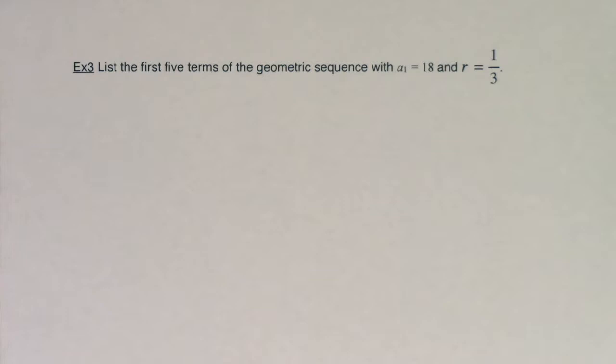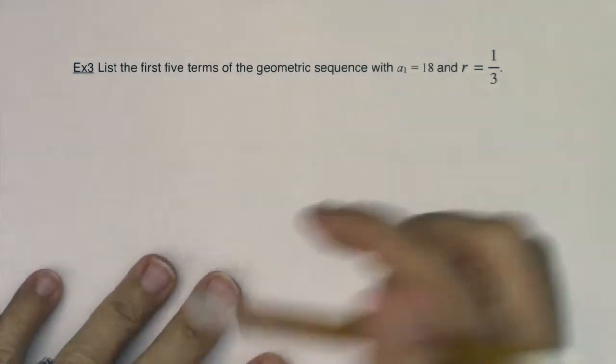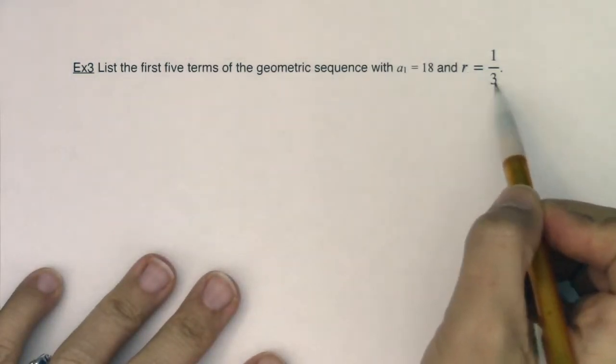Hey Math 31, welcome to example 3. It says list the first five terms of the geometric sequence with a sub 1 being 18 and r being 1/3.